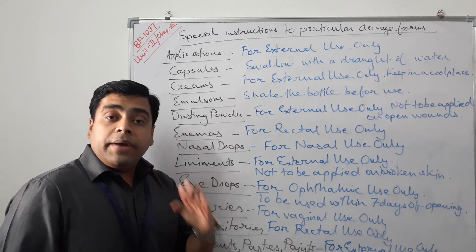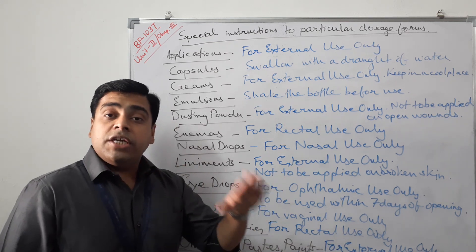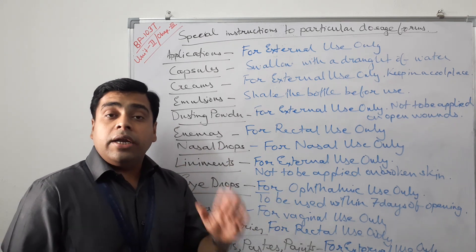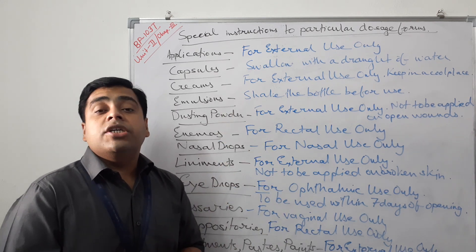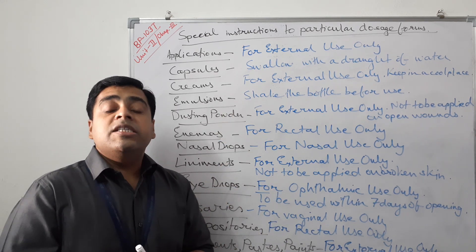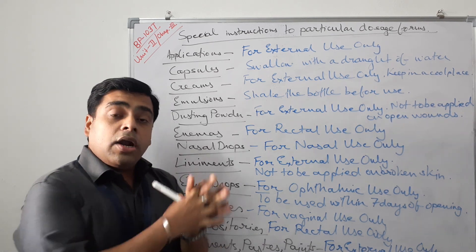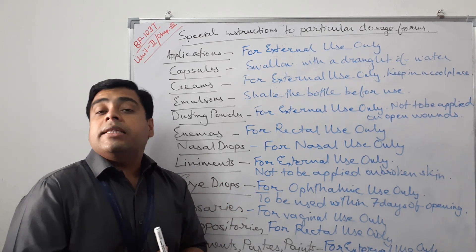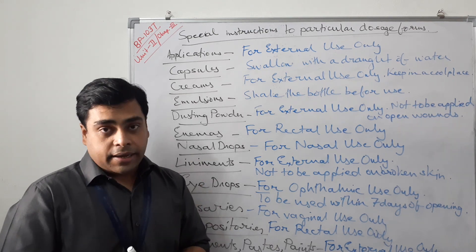For ointments, pastes, or paints, the common instruction is 'for external use only.' So these are the different labeling information that must be present on compounded and dispensed products, and they are also maintained on the labels of finished pharmaceutical products available today.